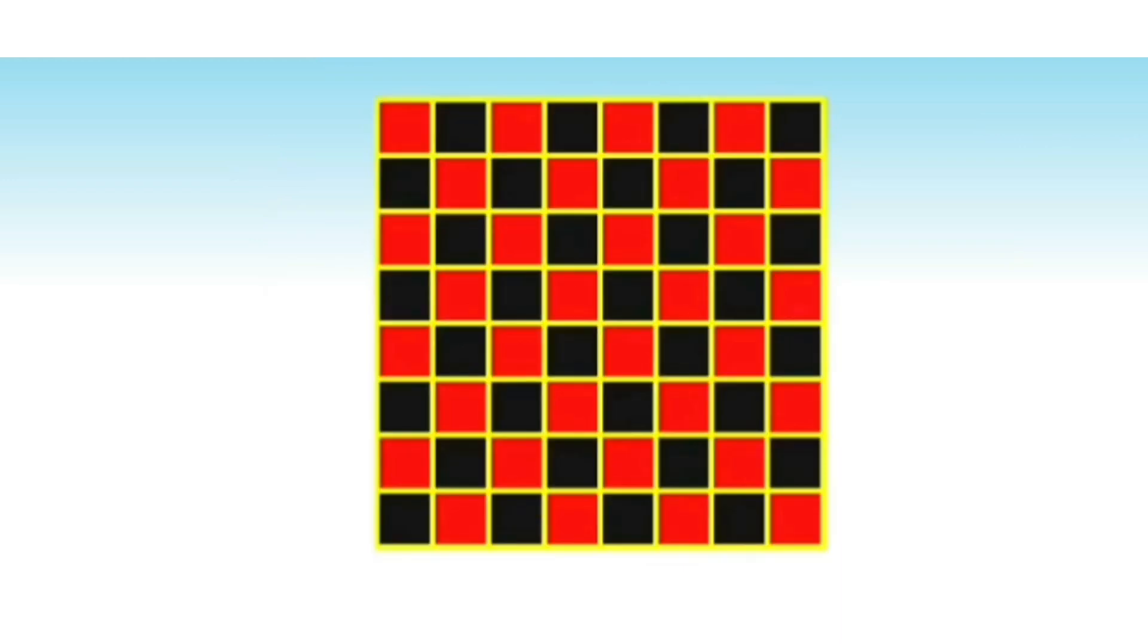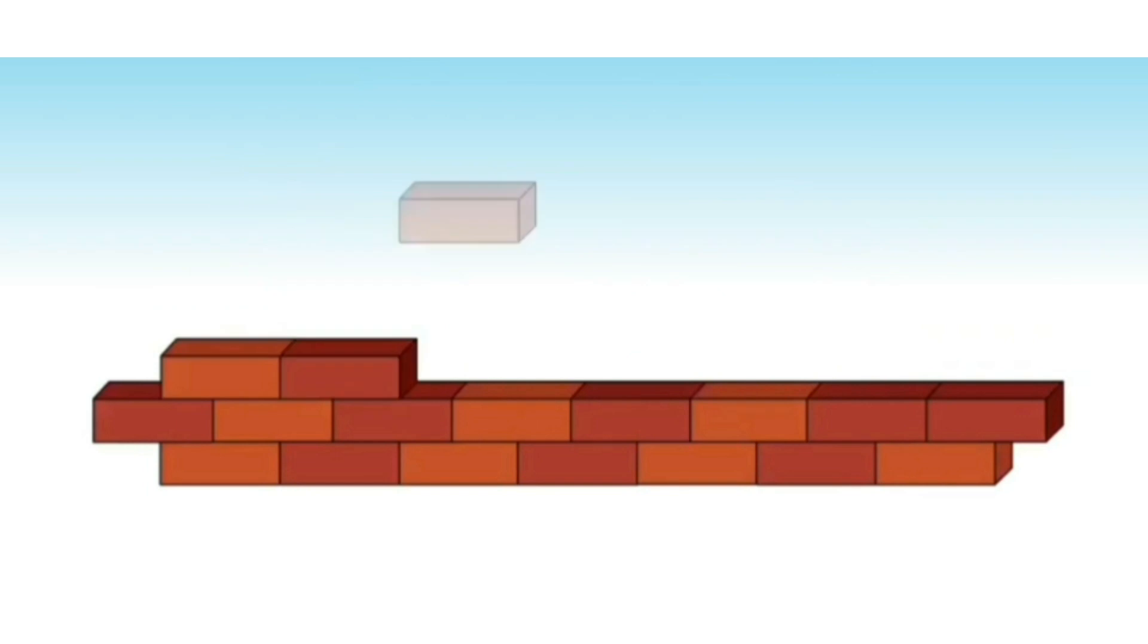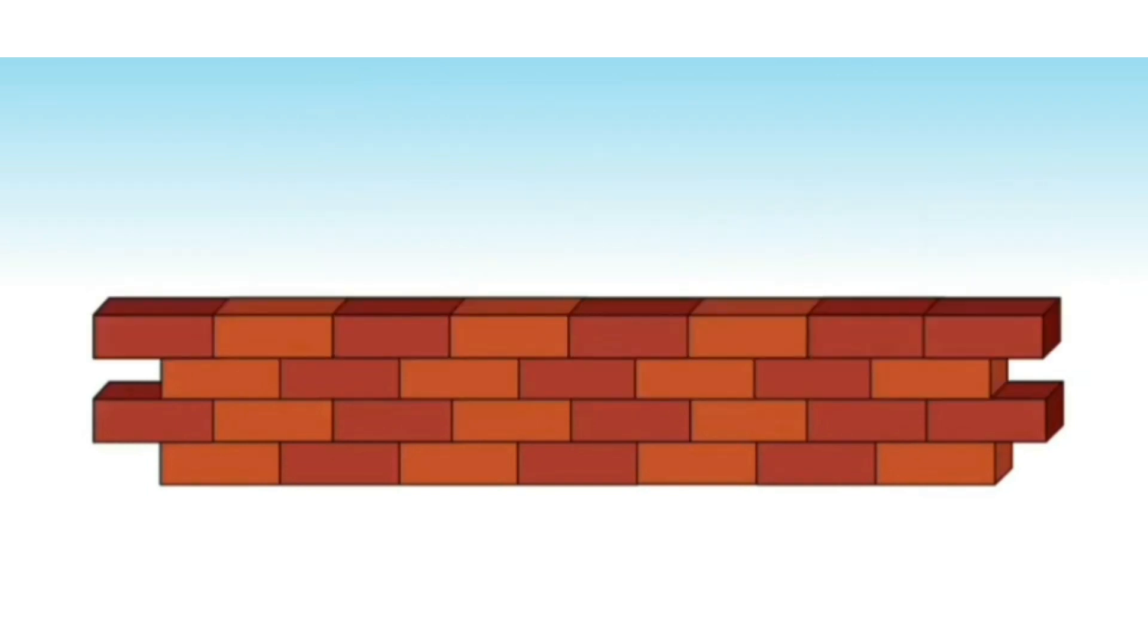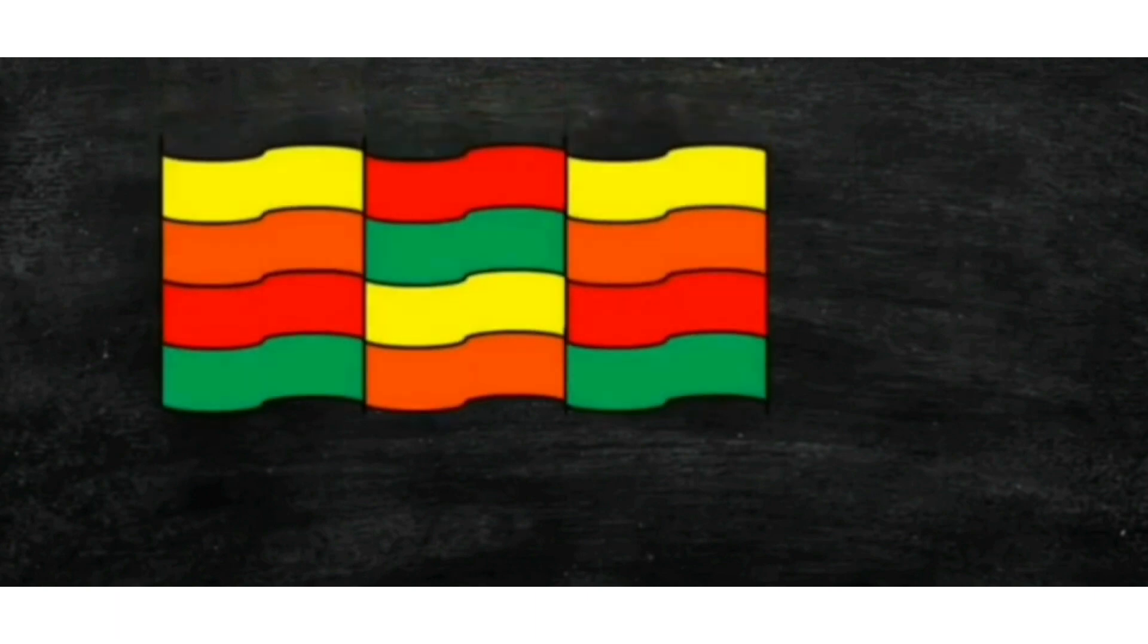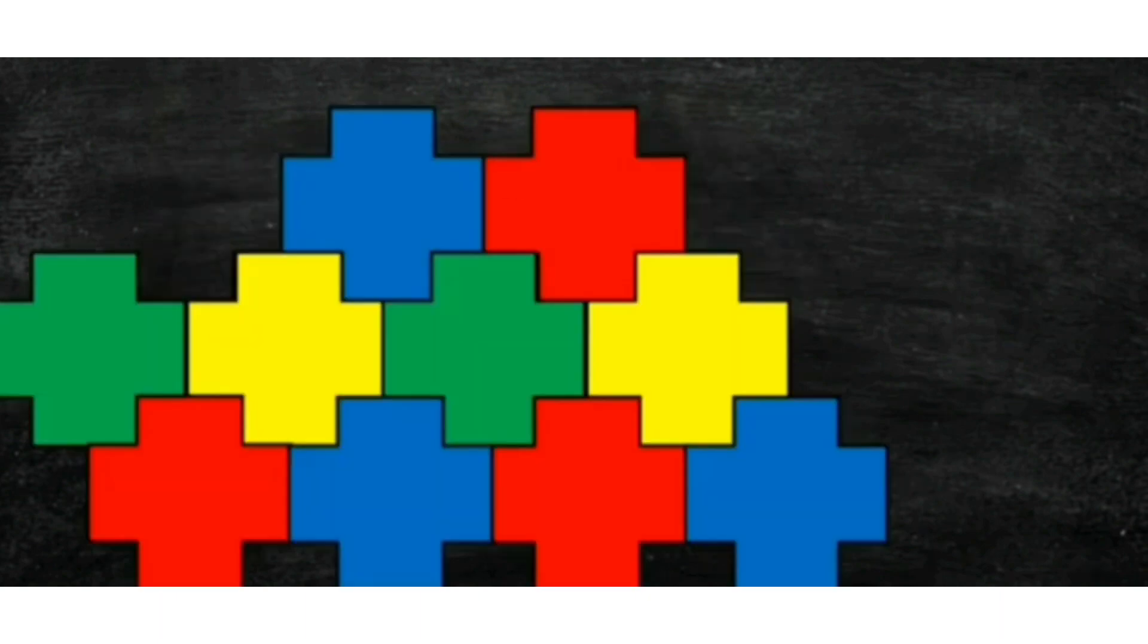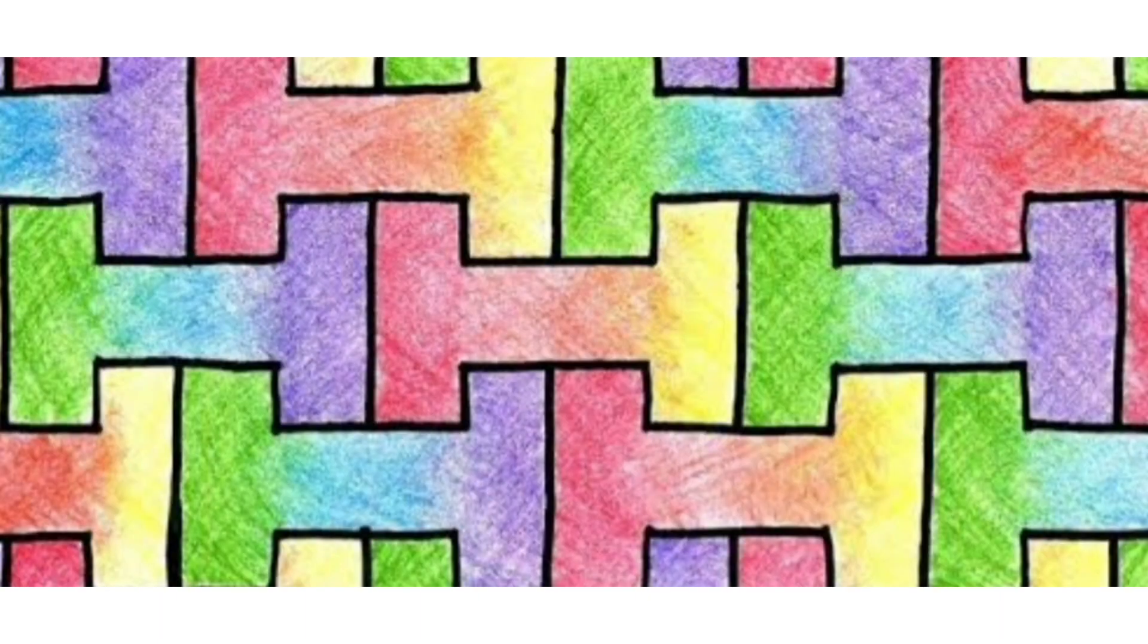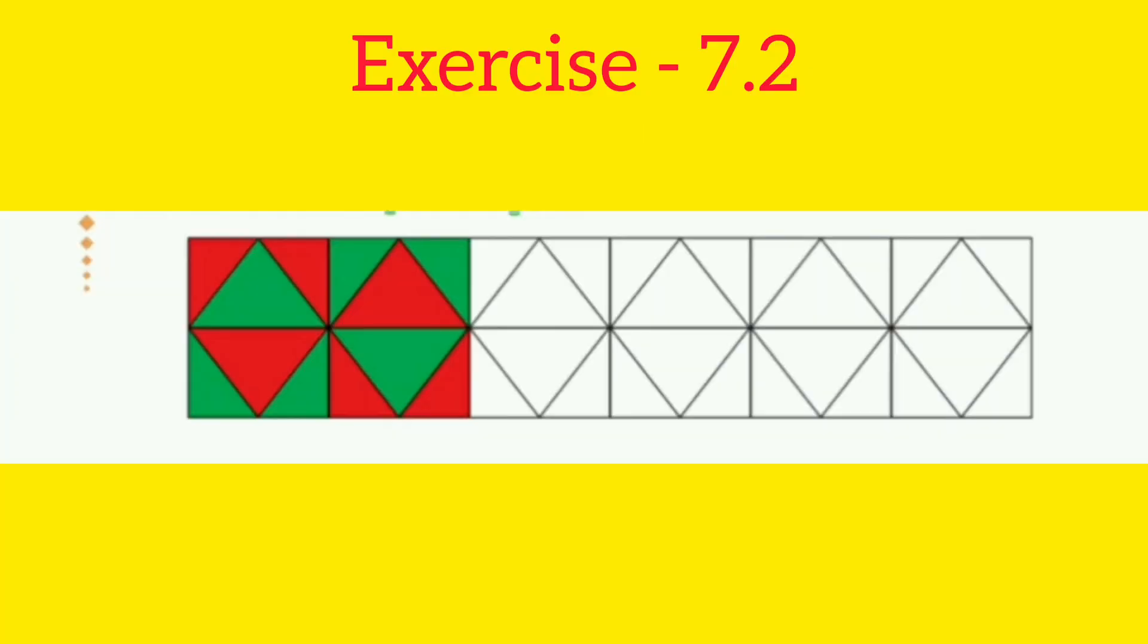In same way, the pattern of bricks on a wall is a tessellation made of rectangles and is the best example of rectangular tessellation. Apart from these, we have seen the designs of various tiles of different shapes around us. Students, we can create different designs by using tiles of various shapes according to tessellation. Come, let's solve the questions of exercise 7.2.